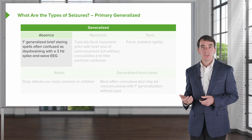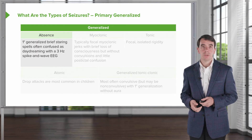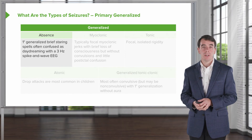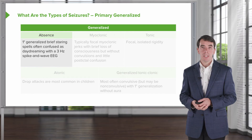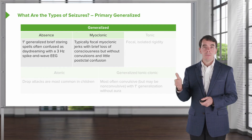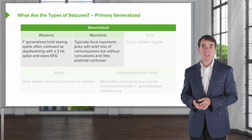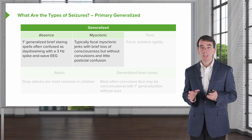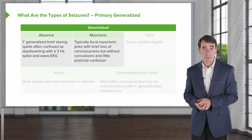For generalized seizures, absence types are primary generalized brief staring spells. They can often be confused with daydreaming, are seen typically in children, and are associated with three hertz spike-and-wave activity on the EEG. Myoclonic generalized seizures are typically focal myoclonic jerks with brief periods of loss of consciousness but without convulsion and very little post-ictal confusion — they may be characterized simply as a brief jerk.